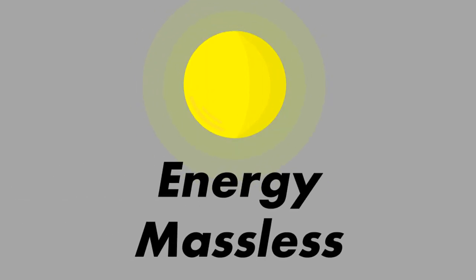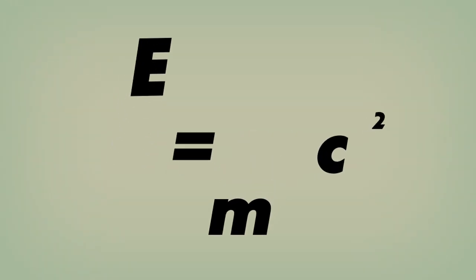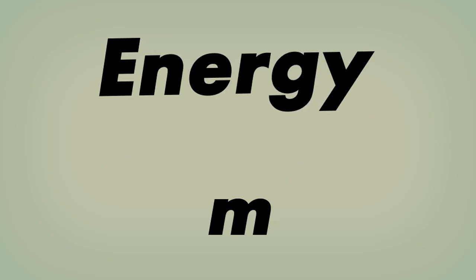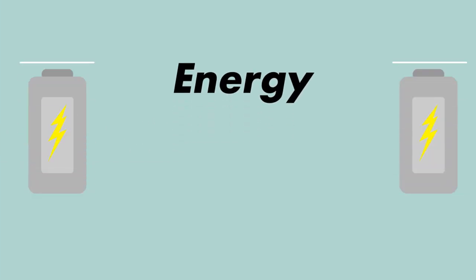But wait a second, photons have energy, and according to the most famous equation on earth, E equals mc squared, anything that has energy has mass. Then how is it possible that photons have energy, but no mass?